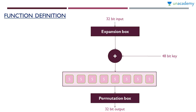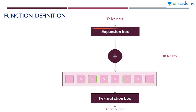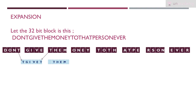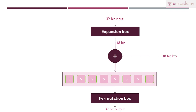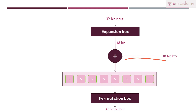We are learning what happens inside this function. There is a 32 bit input and 48 bit key to the function. First, this 32 bit will be given to an expansion box and it will expand to 48 bit. We learnt how that happens — we split this into 8 four-bit blocks and then add 2 bits to each block to make it 48 bit.